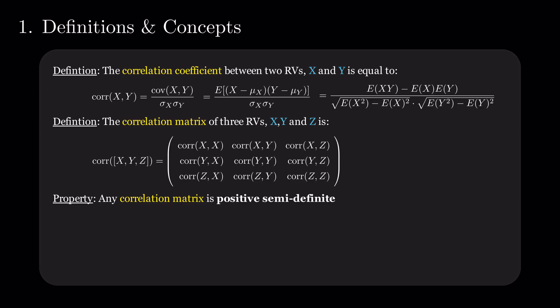One of the basic properties of the correlation matrix is that it is positive semi-definite. A proof of this that uses the definition of such matrix can be, as well, found on our website.